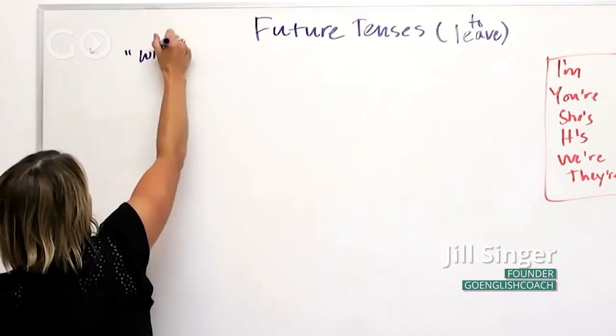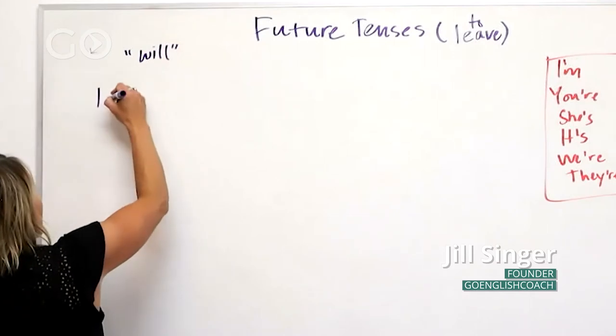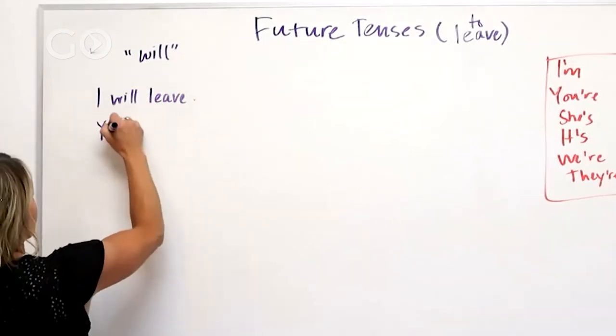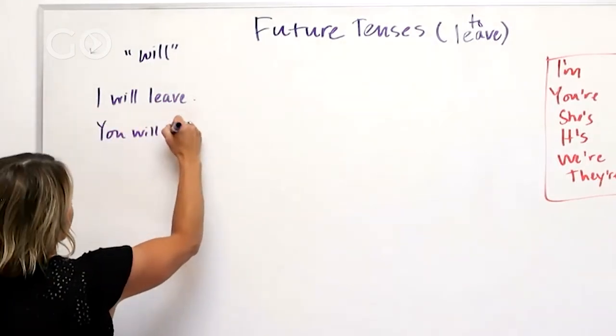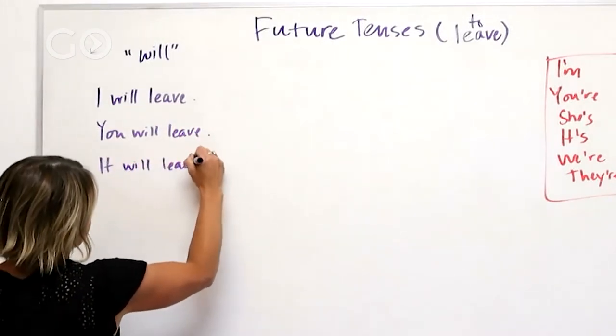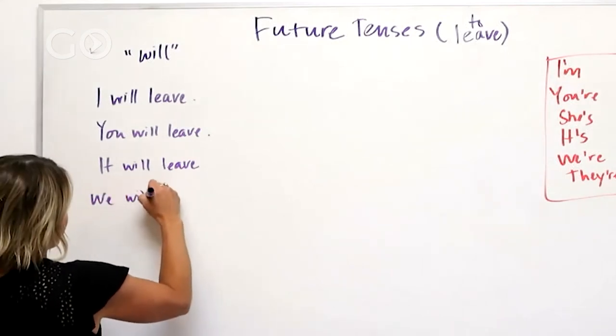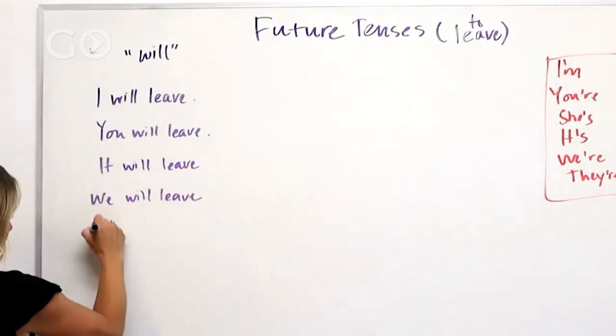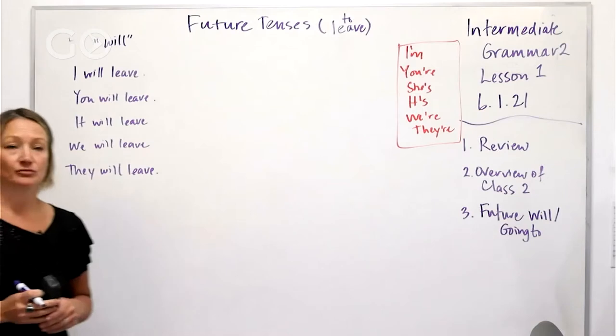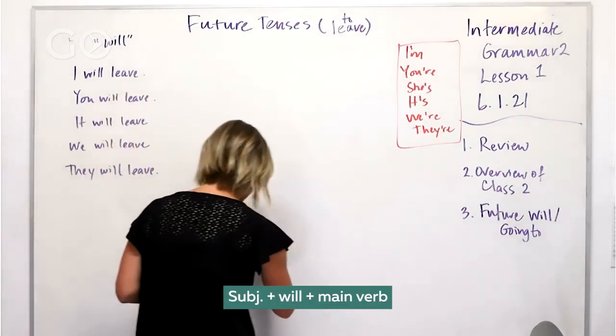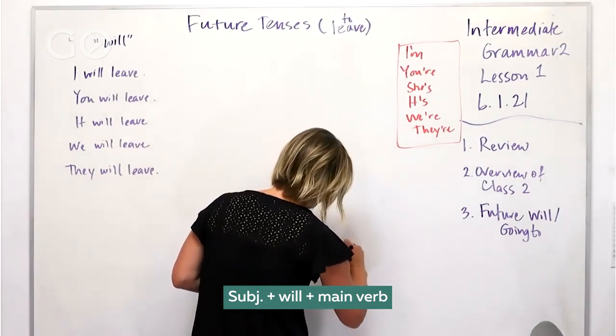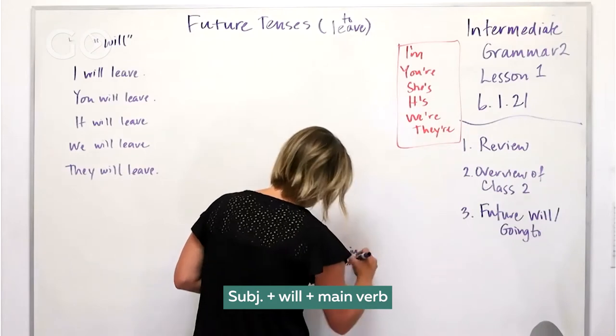Let's do this. This is will. Okay, so I will leave, you will leave, it will leave, we will leave, they will leave. Okay, very simple. We're just putting in, you know, so then your formula is the subject plus will plus the main verb. Okay, and then obviously you can change out that main verb...